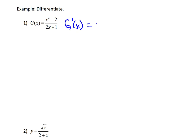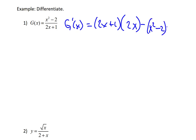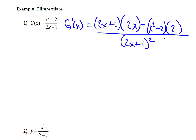Let's utilize the quotient rule: g prime of x equals, using the shortcut notation, low d high. Low is 2x plus 1, times d high — the derivative of the numerator x squared minus 2 — which is just 2x. Then minus high, which is x squared minus 2, times d low. The low is the 2x plus 1 denominator, whose derivative is just 2. That's all over the denominator squared: 2x plus 1 squared.